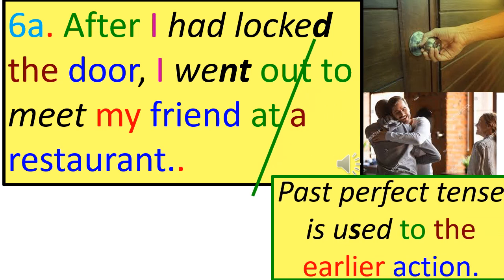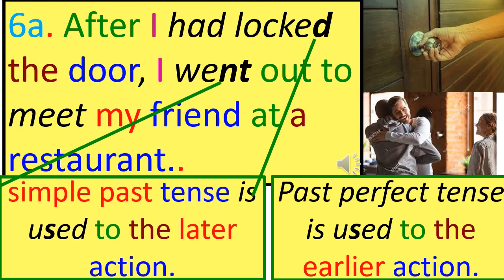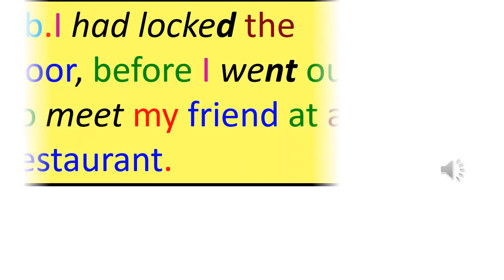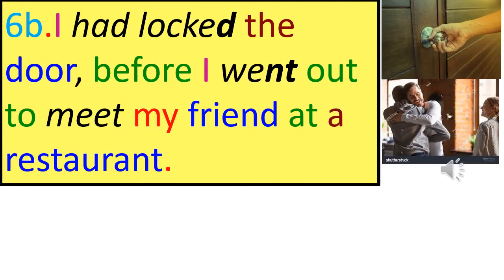Past Perfect Tense is used for the earlier action; Simple Past Tense is used for the later action. The action which occurred earlier is expressed in the Past Perfect Tense, whereas the action which occurred later is expressed in the Simple Past Tense. Using 'before': 'I had locked the door before I went out to meet my friend at a restaurant.'